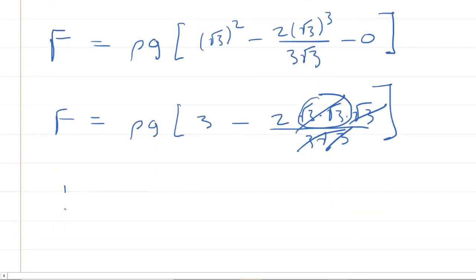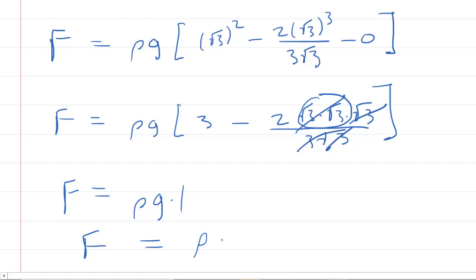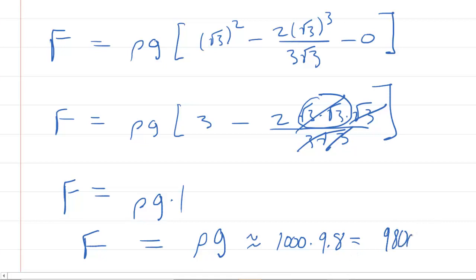So the force acting on this triangular plate is just rho times g. Filling in the values, the density of water is 1000 and g is 9.8, so multiplying that out gives 9800 newtons. That is the correct answer.